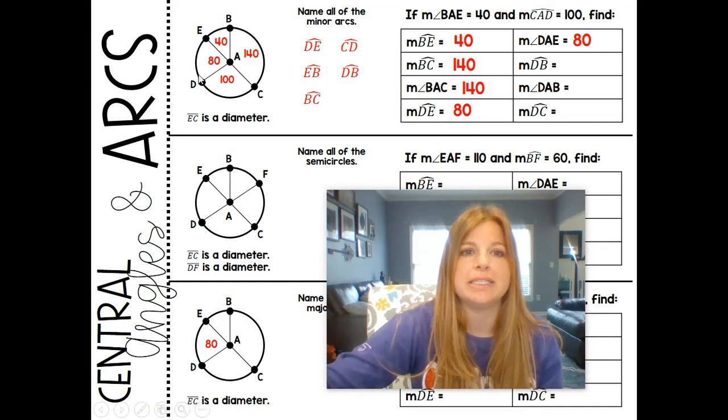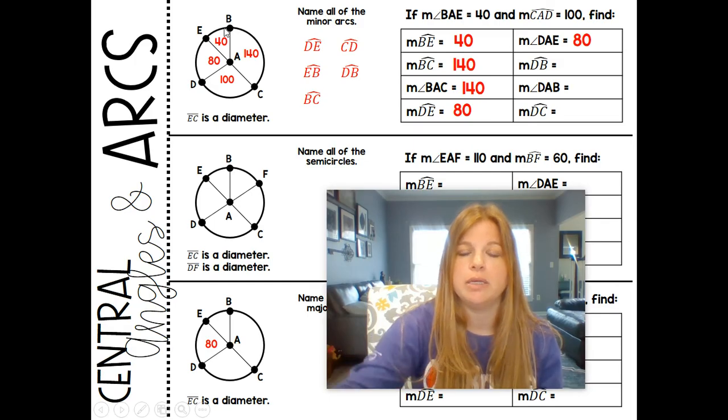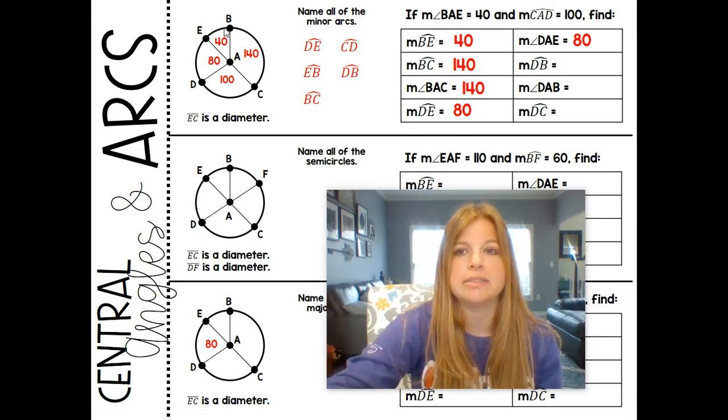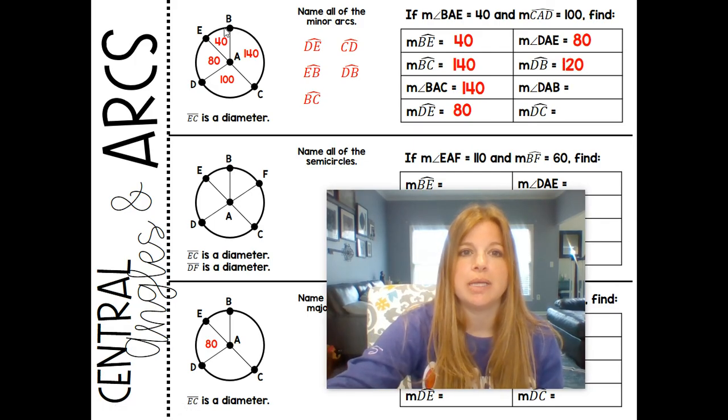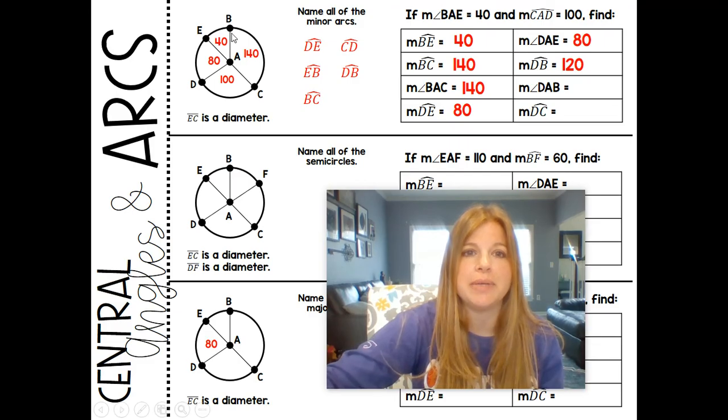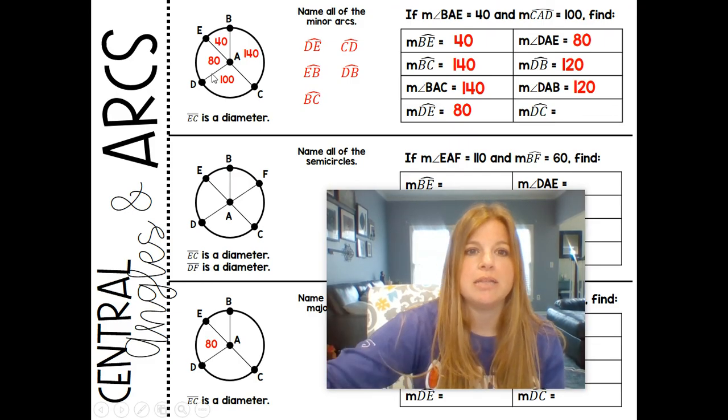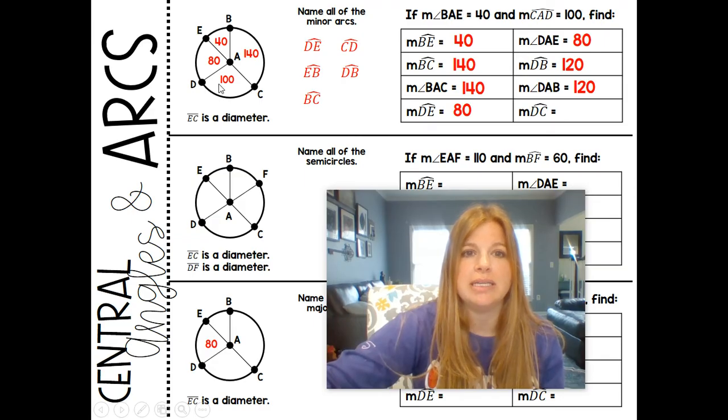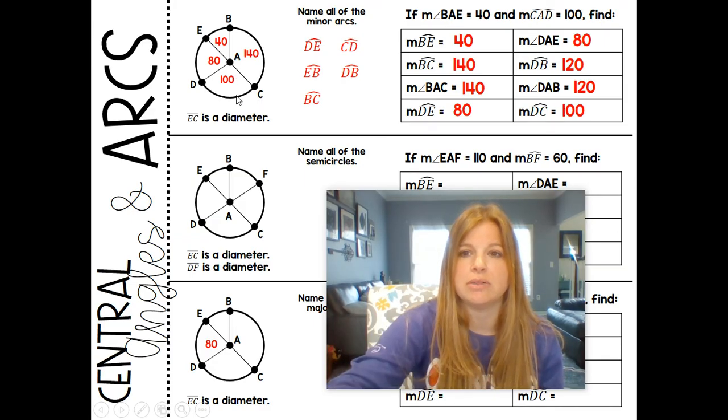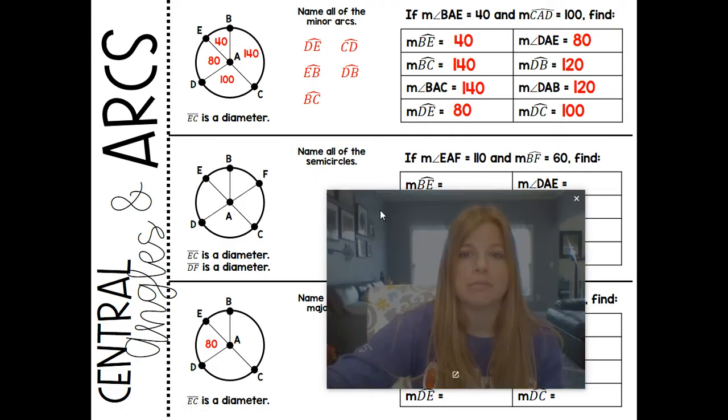Measure of arc DB would be this 80 plus 40. You can add arcs together, guys. So you get 120. Measure of angle DAB, which goes to the center now, is also 120. And the measure of arc DC, well, if the central angle is 100, then arc DC is also 100. Awesome.